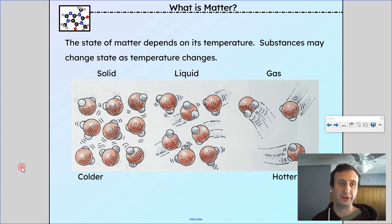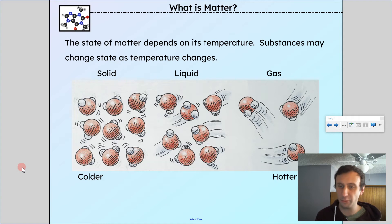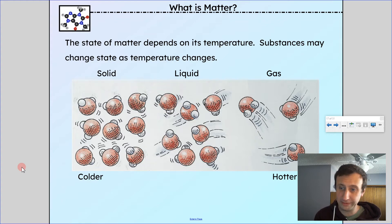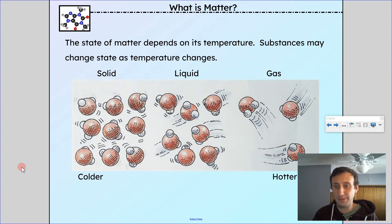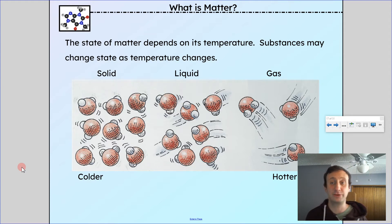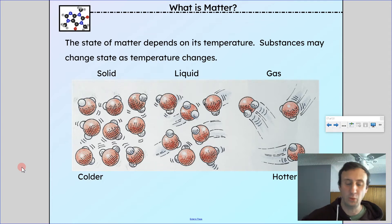The state of matter depends on temperature. Substances may change state as temperature changes, though during a phase change the temperature actually remains the same. For water, it's a solid below 0°C. At 0°C it goes through melting — or fusion scientifically — changing from solid to liquid, staying at 0°C throughout. Then it's liquid until 100°C, where it changes to a gas through vaporization, staying at 100°C during that process. That's why boiling water is always the same temperature — and why a pressure cooker cooks things faster, since it traps the gaseous water so it can actually get hotter.